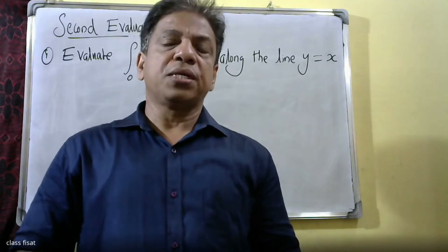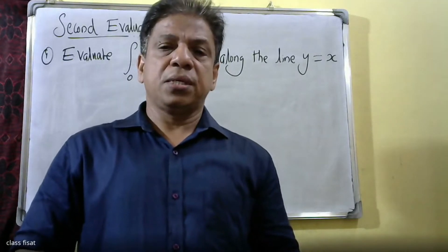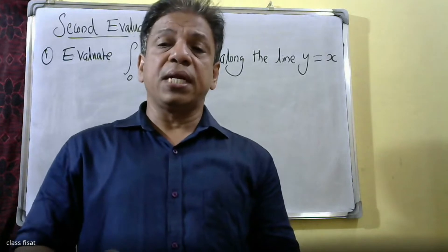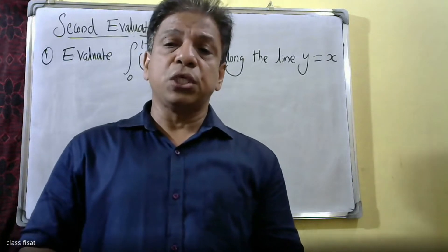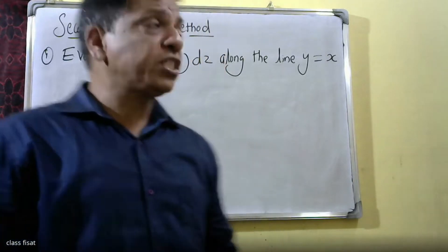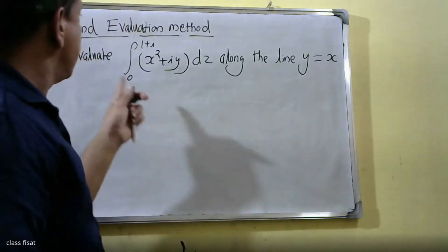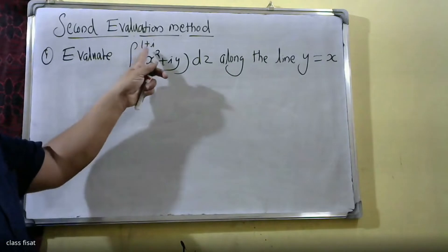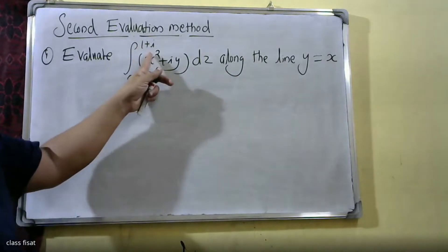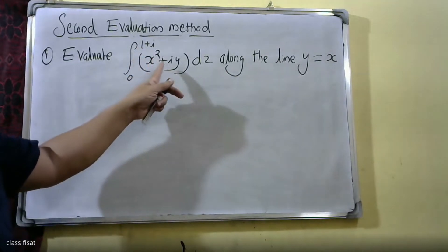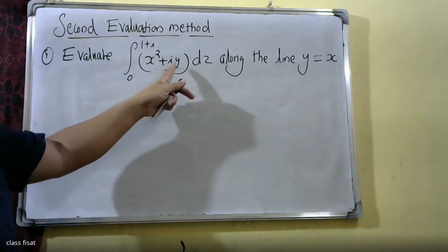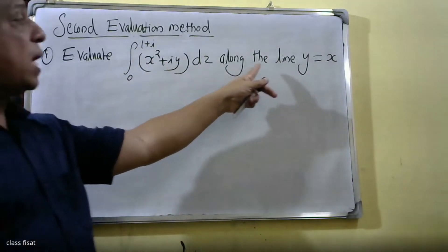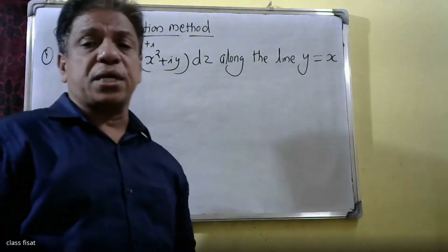Good morning students. Now again the second evaluation method. The first problem is to evaluate the integral from zero to one plus i of x squared plus iy dz along the line y is equal to x.